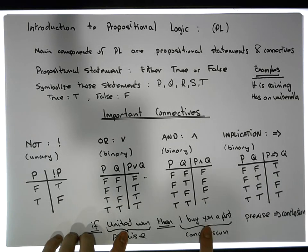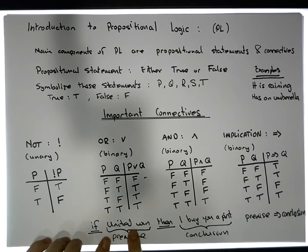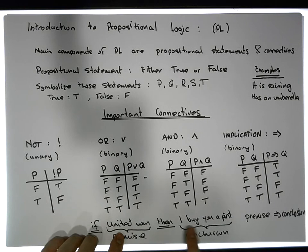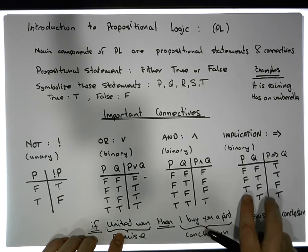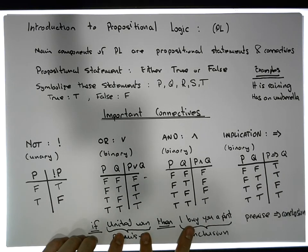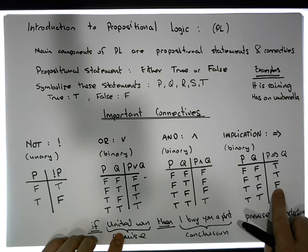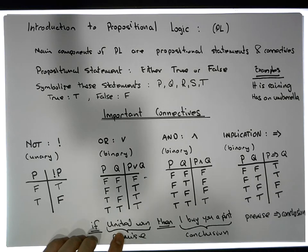Now the other straightforward case: true-false. United do win but I don't buy you a pint. I said 'if United win then I'll buy you a pint,' United did win, and I didn't buy you a pint — so I've told you a lie. That gives us false.